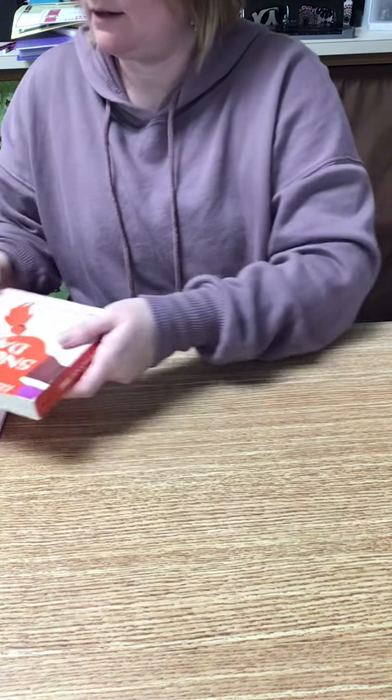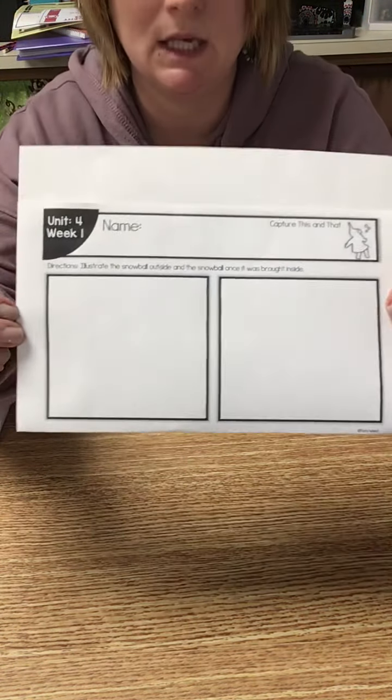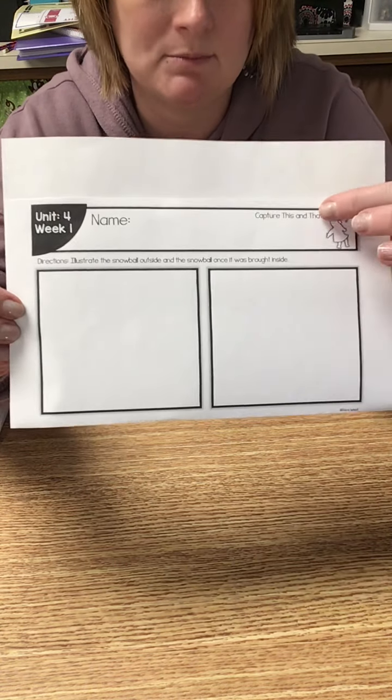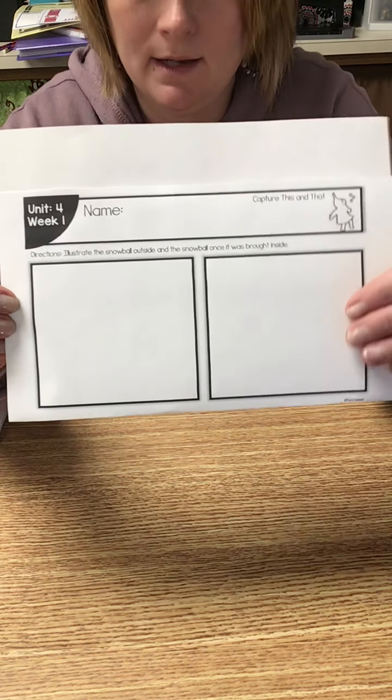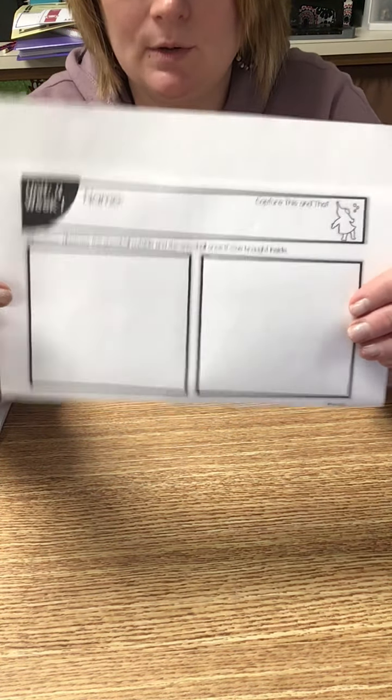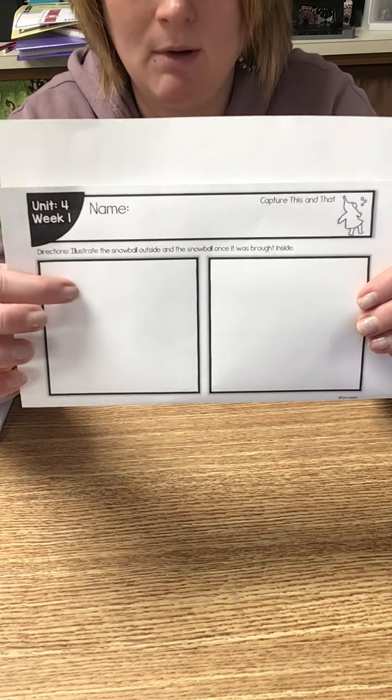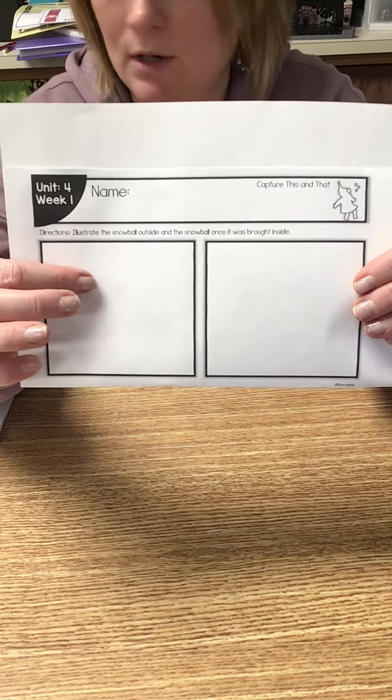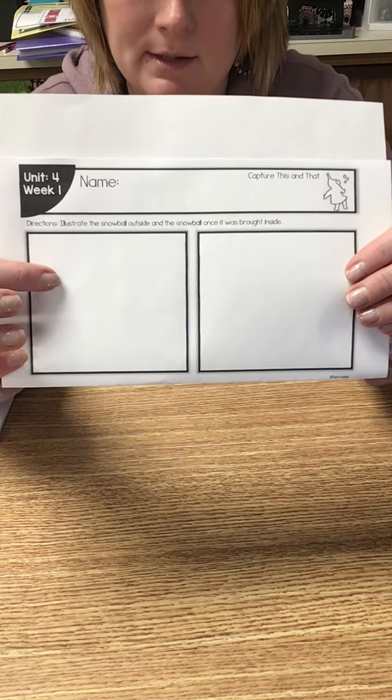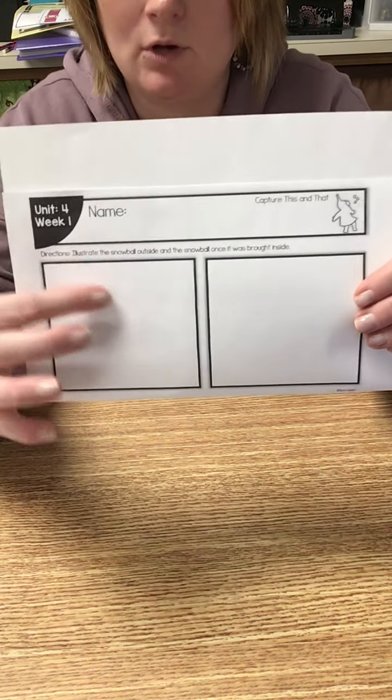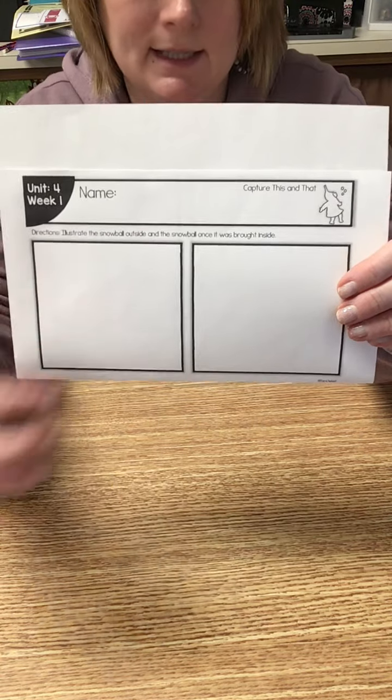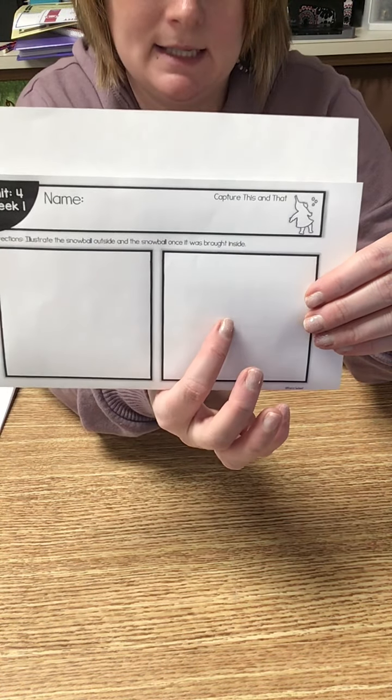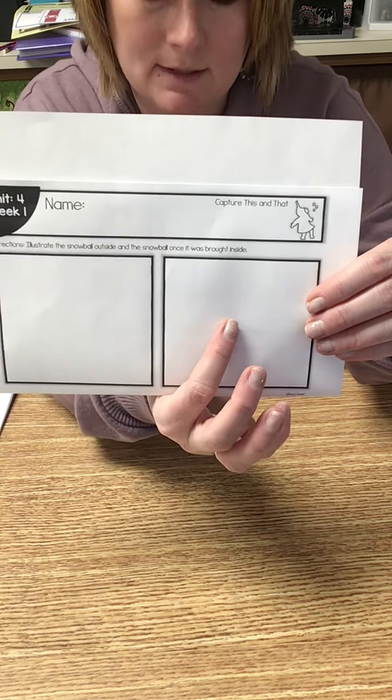All right, so you have a paper in your packet that looks like this. It says capture this and that. And what you're going to do is you're going to draw what the snowball looked like outside in this picture. The snowball that Peter was going to put in his pocket, remember?